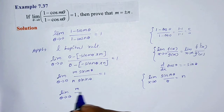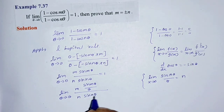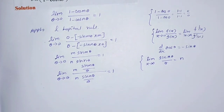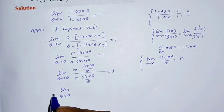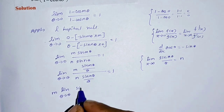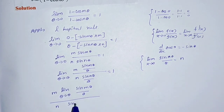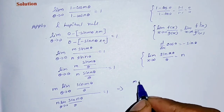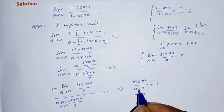We rewrite this by dividing numerator and denominator by theta: m times [sin(m-theta)/theta] divided by n times [sin(n-theta)/theta], equal to 1. Applying the standard limit — the limit as theta tends to 0 of sin(m-theta)/theta equals m, and similarly for n — we get m times m divided by n times n equals 1, which gives m squared over n squared equals 1.